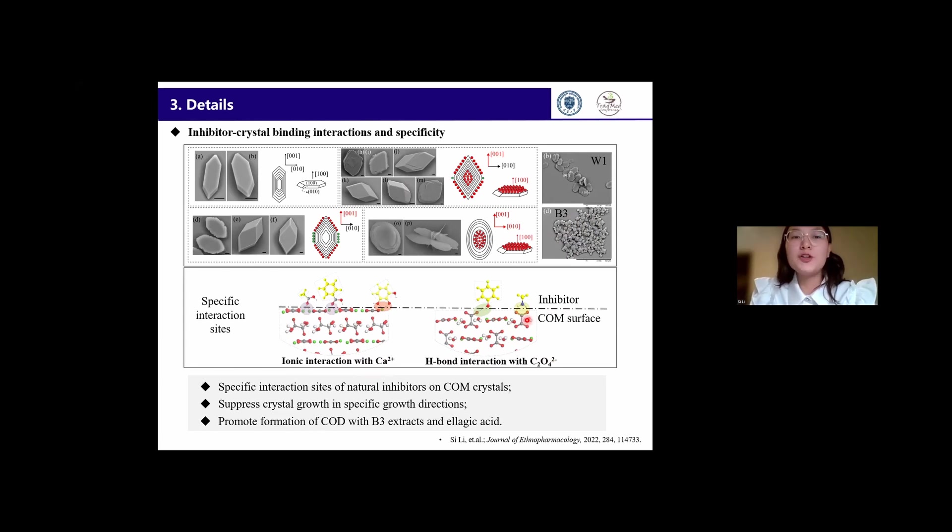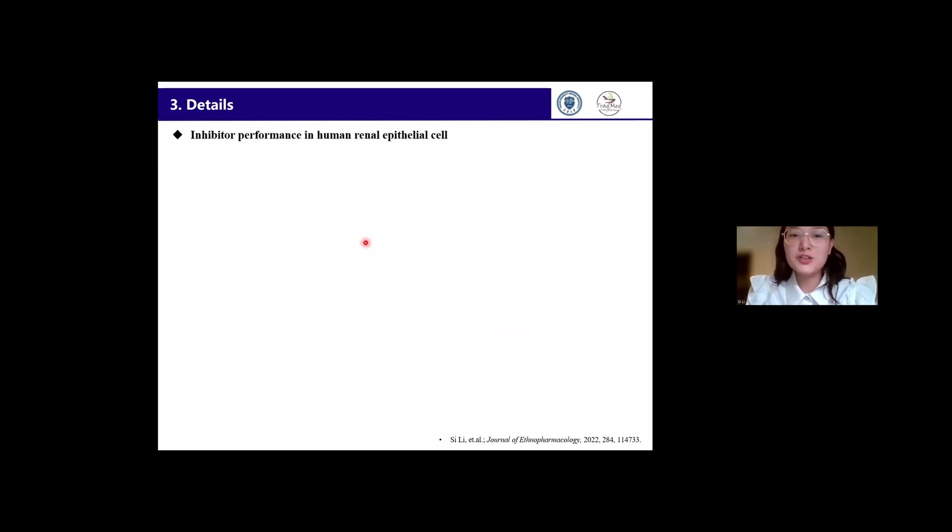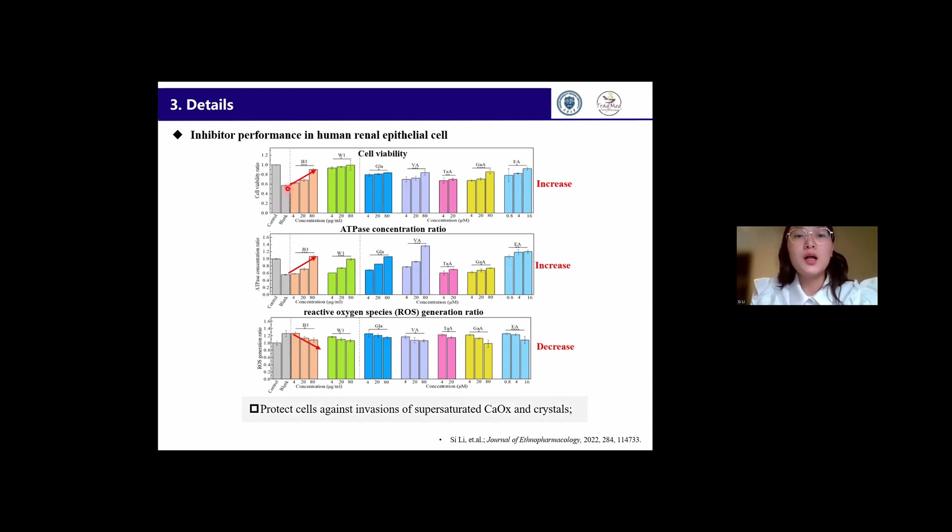Then the inhibition performance of these inhibitors on calcium oxalate stone formation were further investigated by cell experiments. Compared with the control, the increased cell viability and the increased LDH concentration ratio and the decreased ROS generation ratio all suggest that these discovered natural inhibitors can protect the cells against the invasion of supersaturated calcium oxalate solution and the crystals.